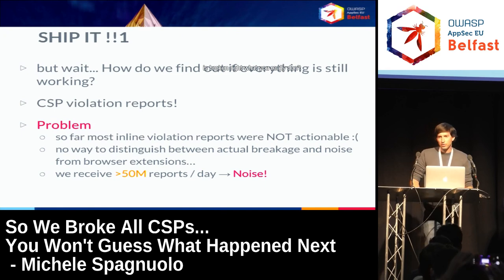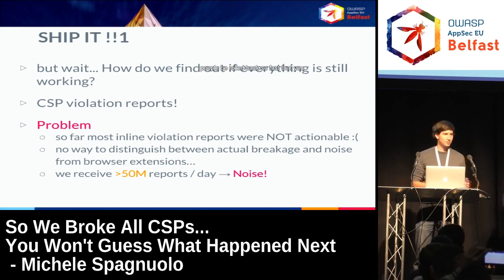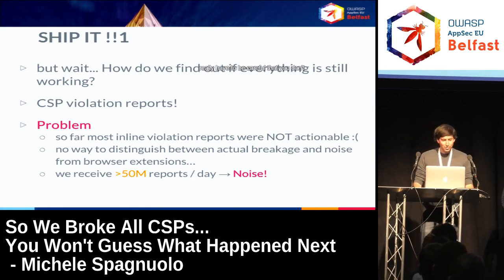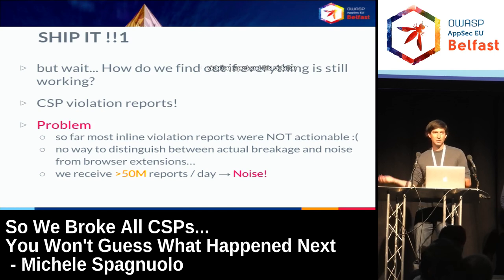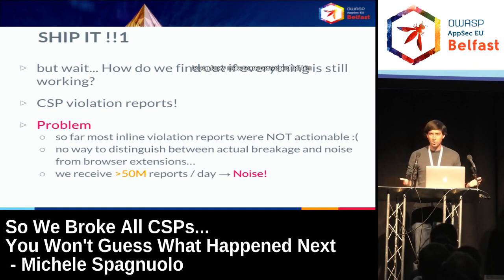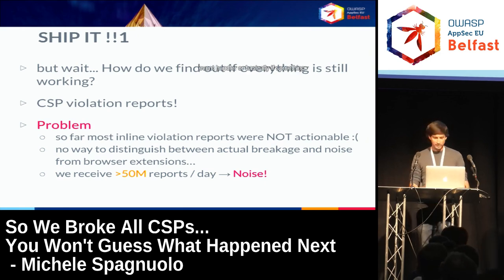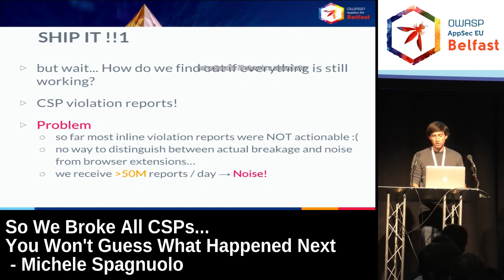There's a critical problem: how do you find out if something is broken? You really don't want to roll out a CSP that breaks Gmail, because it would be rolled back immediately. CSP violation reports were supposed to help with this — when a violation occurs and reporting is enabled, the browser sends back a violation report to tell the developer what went wrong. But the problem is that most of these violation reports are not actionable.